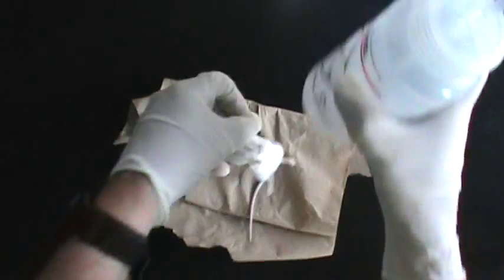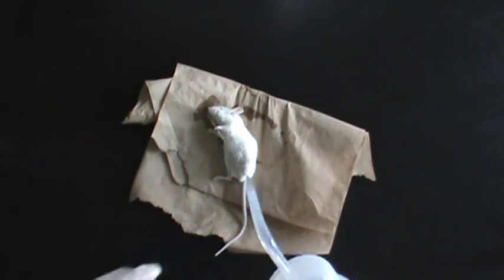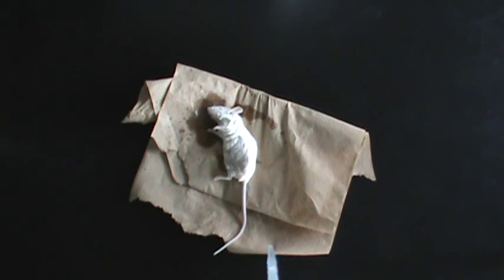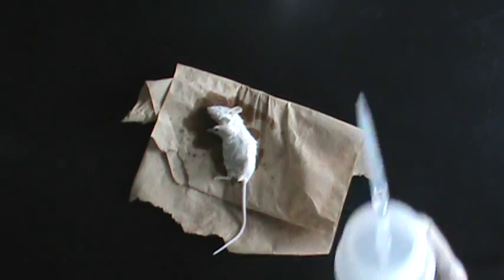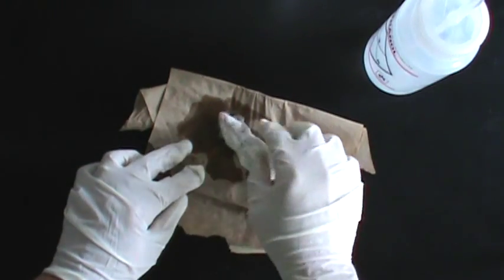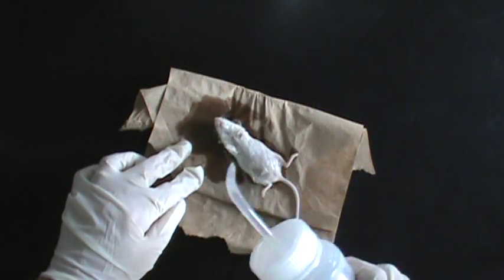The mouse that we will use will already be sacrificed for you in a humane manner using an overdose of carbon dioxide. Place the mouse on a piece of paper towel and soak it with ethanol. This does two things: it helps keep the area that you're working sterile and it also keeps the fur of the mouse from getting all over the place.